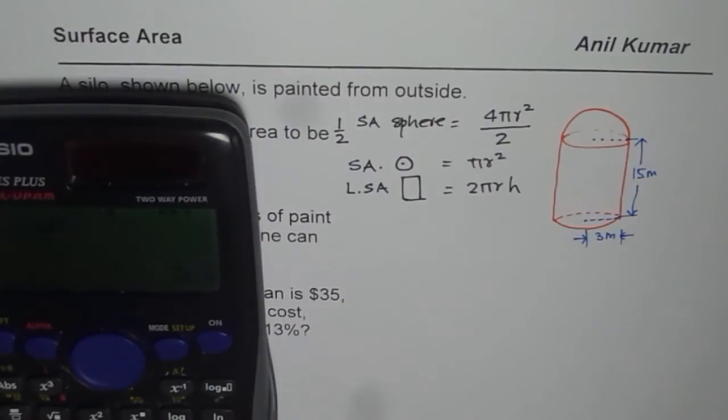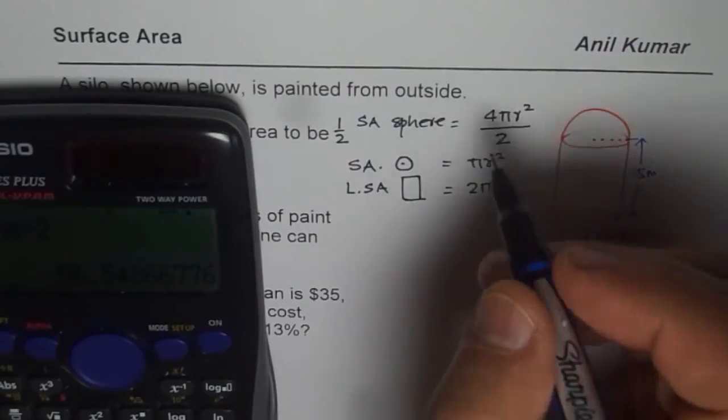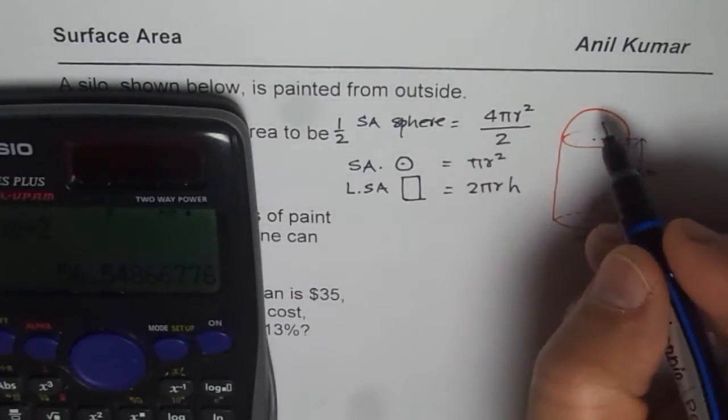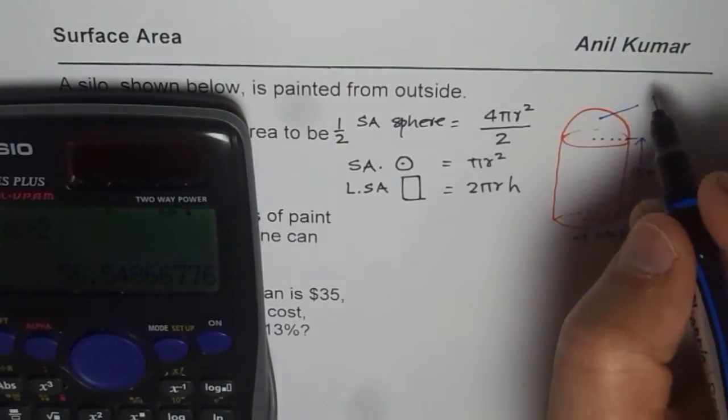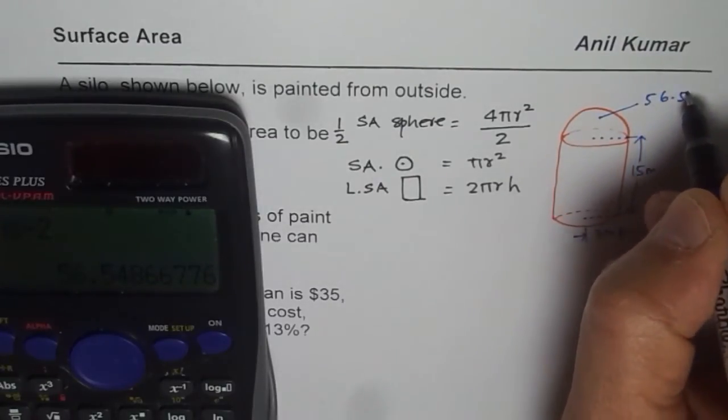We have to divide this by 2 since this is a semi-sphere, so it is 18π or approximately 56.54. I will round this area to 56.55.